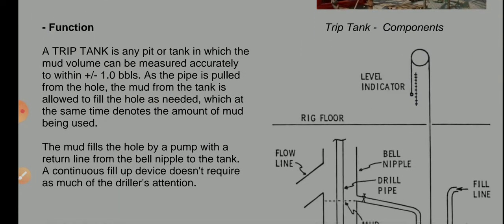The function of the trip tank is any pit or tank in which the mud volume can be measured accurately to within plus or minus one barrel. As the pipe is pulled from the hole, the mud from the tank is allowed to fill the hole as needed, which at the same time indicates the amount of mud being used. The mud fills the hole by a pump with a return line from the bell nipple to the tank. A continuous fill-up device does not require as much of the driller's attention.